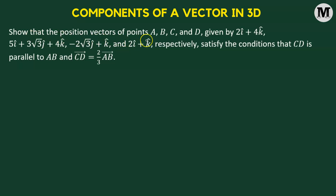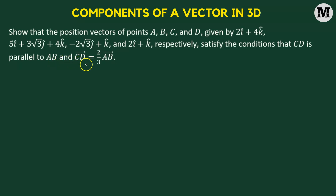Show that the position vectors of points A, B, C, and D given by the following vectors satisfy the conditions that CD is going to be parallel to AB, and CD vector equals two-thirds of AB.